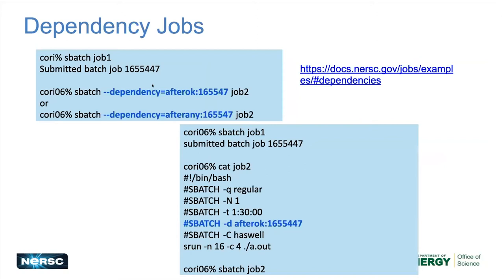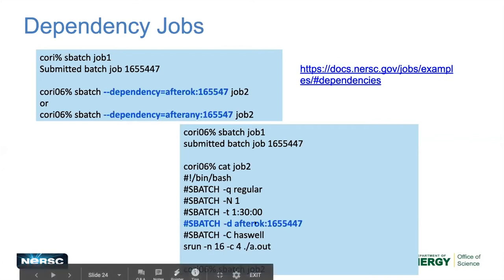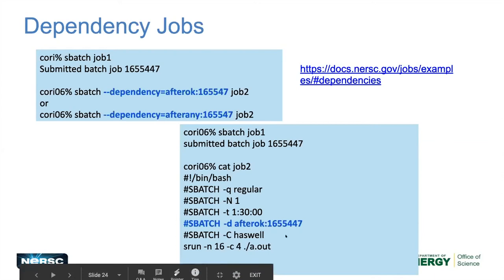Dependency jobs let you start a second job only after the first finishes. In an sbatch script, use --dependency=afterok:<jobid> to start after successful completion, or afterany to start regardless of outcome. In a script, use capital -D afterok. You always submit the first job, get its job ID, then use it in your dependency chain.